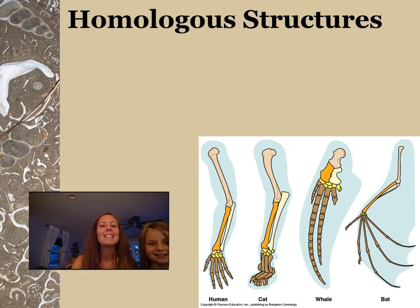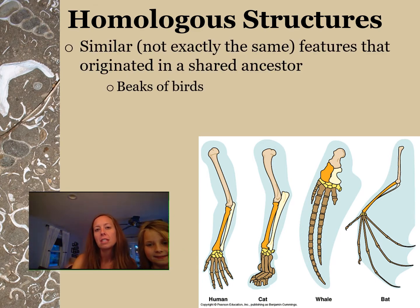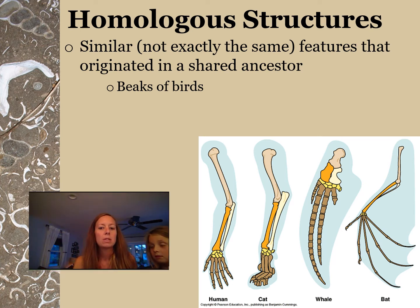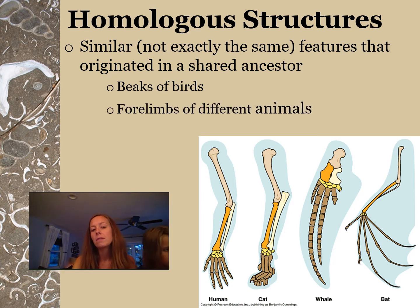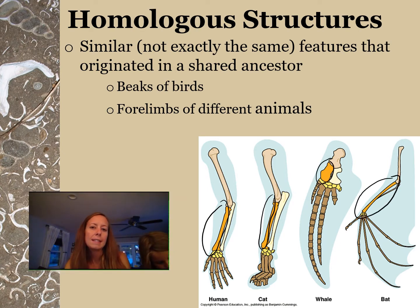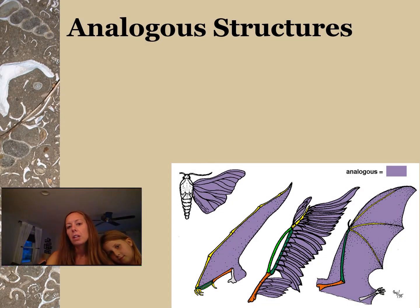Homologous structures are similar but not exactly the same features that originated in a shared ancestor — something older than these organisms that had the same structure. For example, beaks on birds: all birds have a beak, but their beaks are different. Or four limbs of different animals — if you look at this picture, you can see that same dark orange bone appearing in all of them, showing they clearly had a common ancestor.